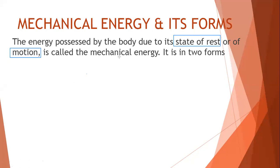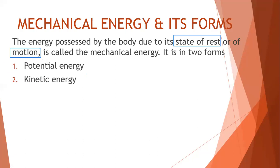Mechanical energy is in two forms. Mechanical energy is classified into two: the first is potential energy and the second is kinetic energy. The energy possessed by the body due to the state of rest — if the object is not moving, only due to the state of its rest — then the object may possess potential energy. And if the object is in motion, then the energy it possesses is called kinetic energy.